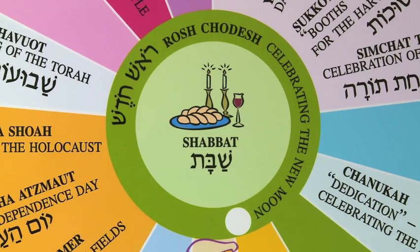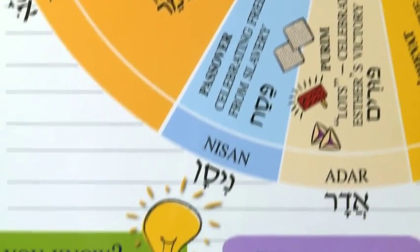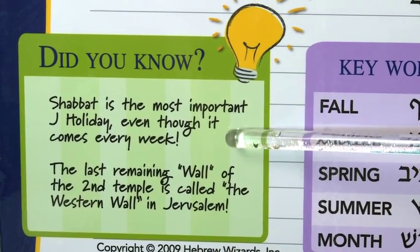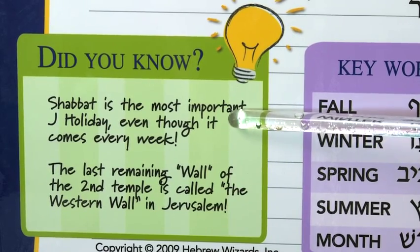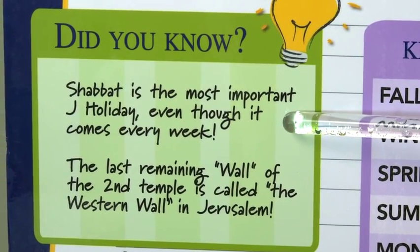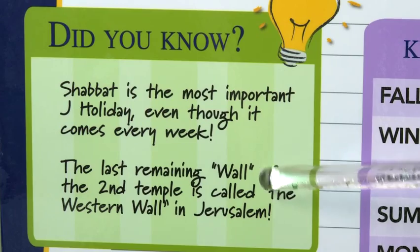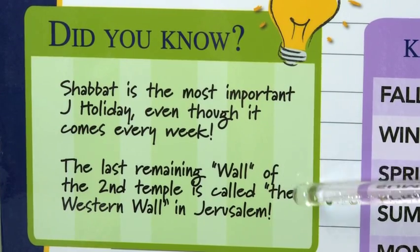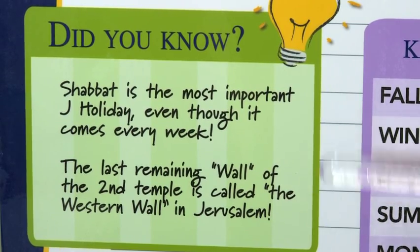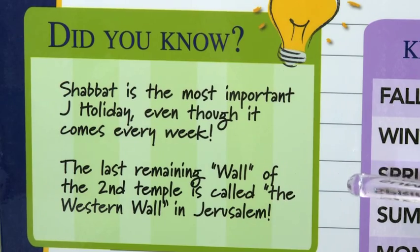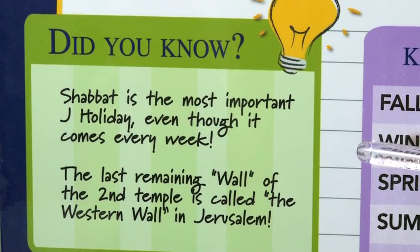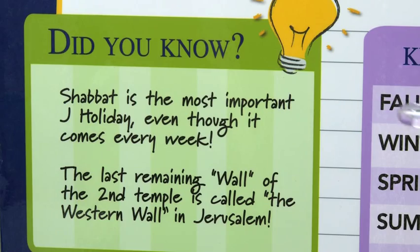So let's look at Did You Knows. Did you know the Shabbat is the most important holiday of the Jewish holidays, even though it comes once a week? That is something most people don't know. When you say, what is the holiest holiday of all, they probably won't know. And of course we just talked about the Western Wall — a lot of people won't know what that is. Some people call it the Wailing Wall. We like to refer to it as the Kotel, which is the wall, or the Western Wall, as it faces west to all of us and we like to face east toward it.